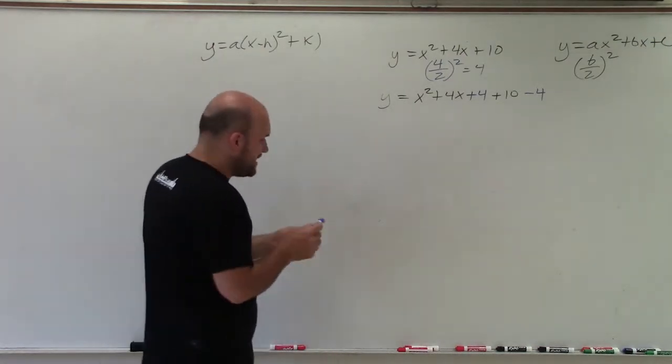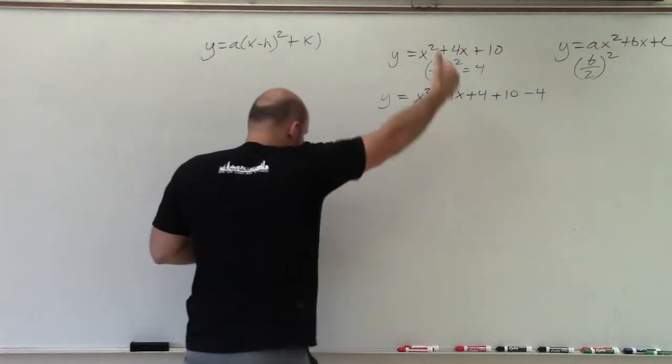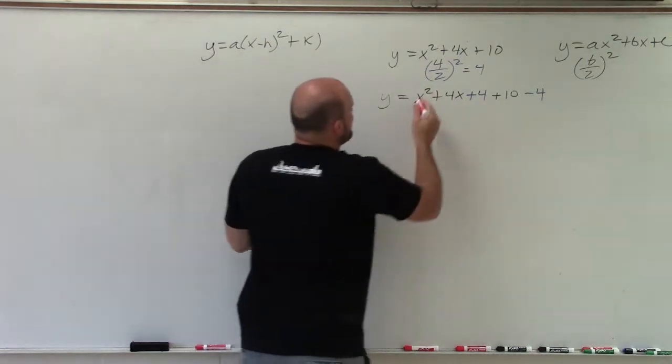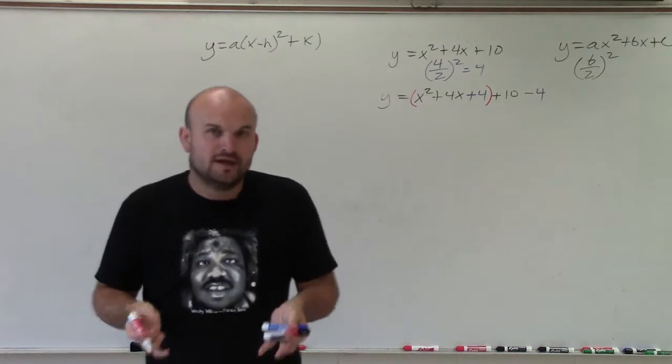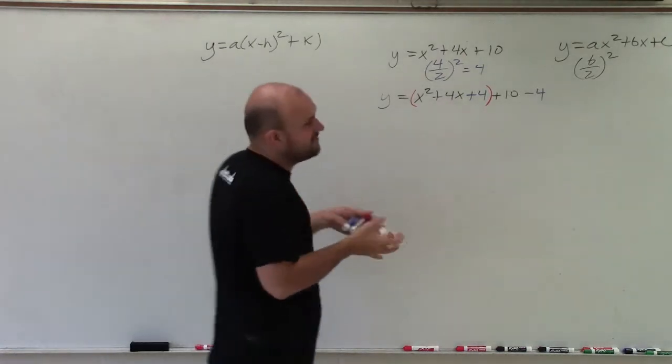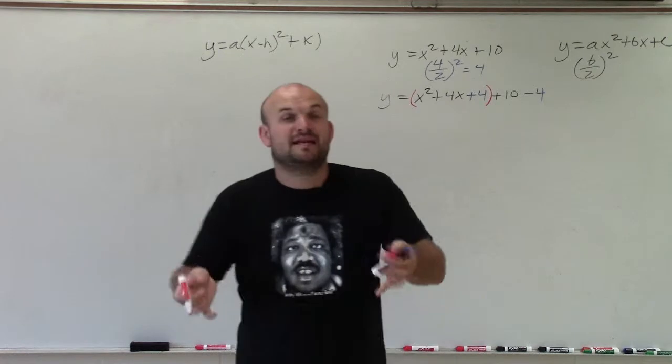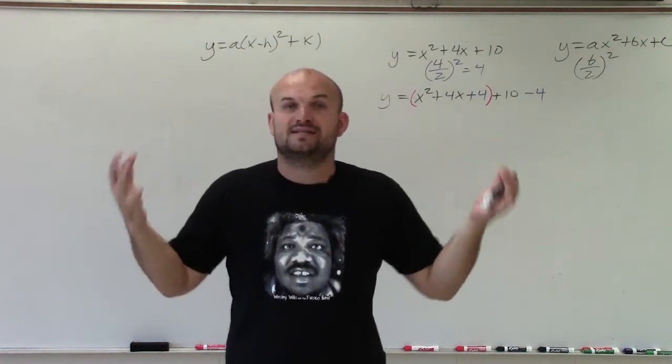Alright, so by adding that, by dividing b by 2 and squaring it and adding it on both sides, what I have now done is I have created a perfect square trinomial. A perfect square trinomial can be factored down to a binomial squared, meaning a binomial multiplied by itself.